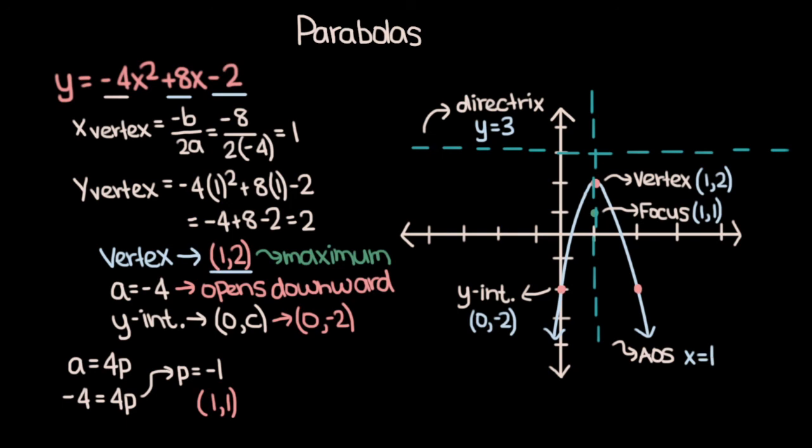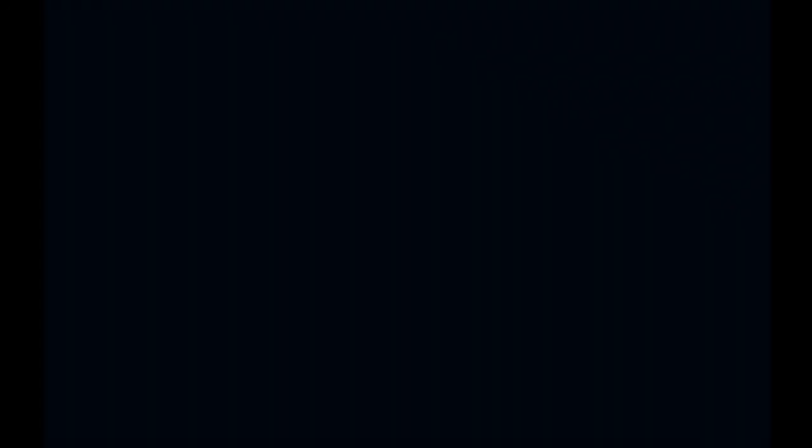Alright, so there you have a complete sketch of the parabola y equals negative 4x squared plus 8x minus 2. That's it for this video. If it helped you out, please be sure to leave a like, and if you want to be notified when I post the rest of the videos in this course, make sure to subscribe.